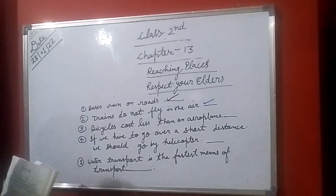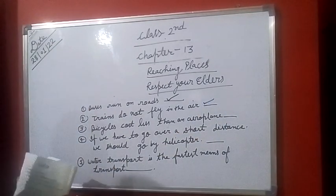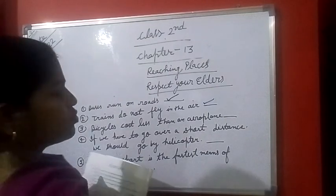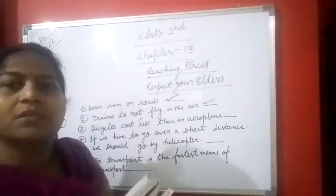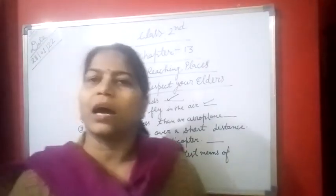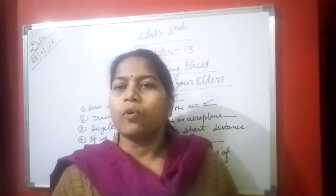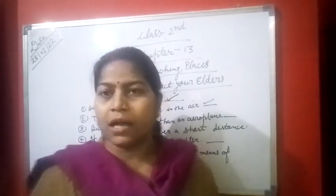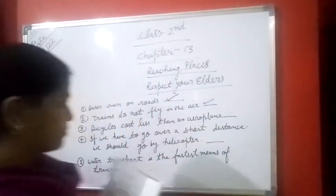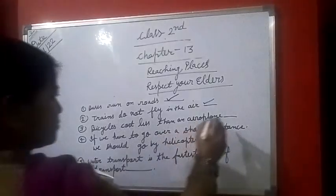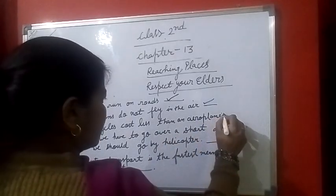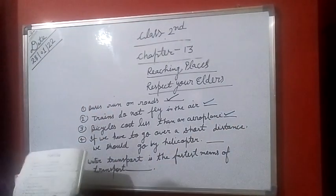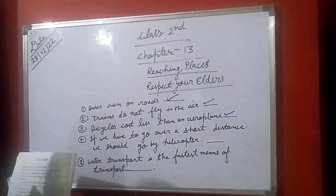Number 3: Bicycle cost less than an aeroplane. Jo bicycle ka cost — dam hai — woh ek aeroplane se kum hota hai? Yes. Number 3 is tick.